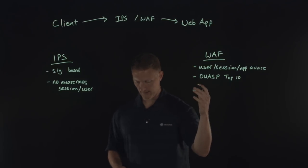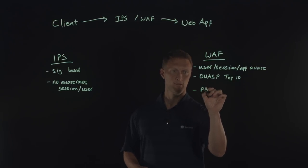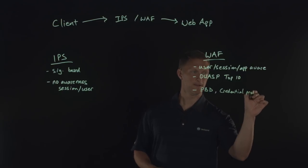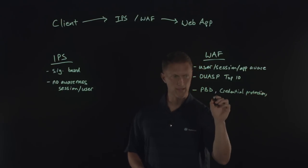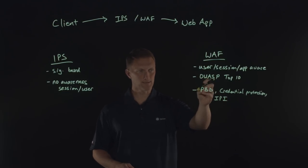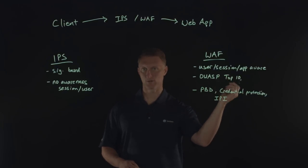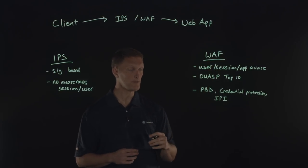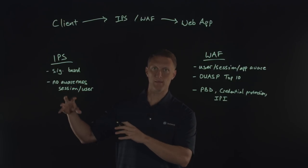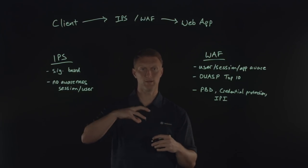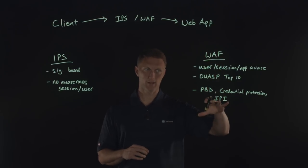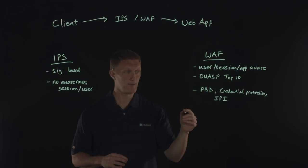The F5 WAF specifically has some really cool features, including proactive bot defense (PBD), credential protection, and IP intelligence (IPI). These are some very sophisticated bot defense mechanisms. Credential stuffing and credential theft are a big deal today, and there are protections built into the F5 WAF for that. IP intelligence means we can track IP addresses out there in the world, and if one is known to be bad, when a request comes in from one of those bad IPs, we can take action on it. That's a high-level overview of what the WAF offers.